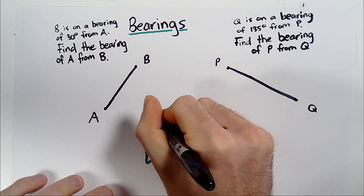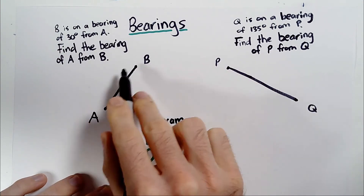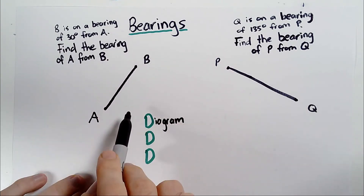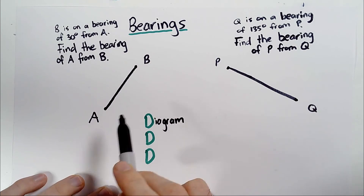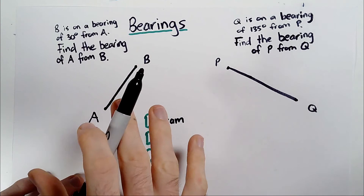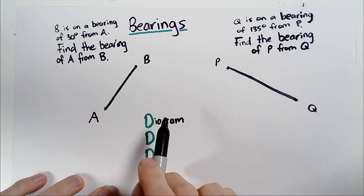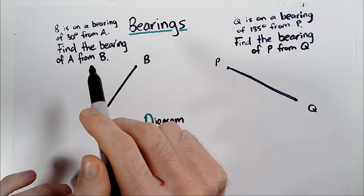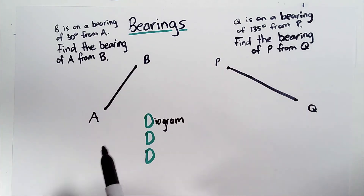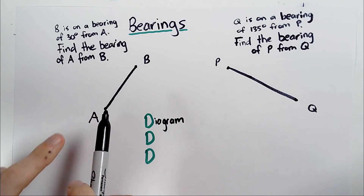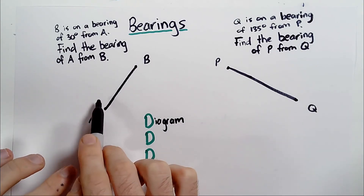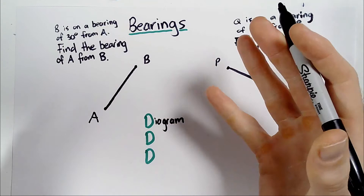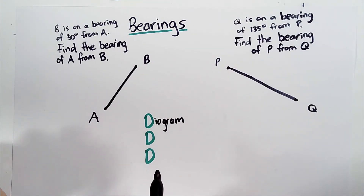The first D represents diagram. We want to have a diagram to represent the information. There are still people who would look at a question where they didn't already provide a diagram and wouldn't draw one in themselves. So you need to draw a diagram so you can visually see what's going on. Make sure it's a big diagram — don't draw a small one even if the numbers are small. Exaggerate the information so you can clearly see what's going on and so angles aren't being smudged in and barely visible.